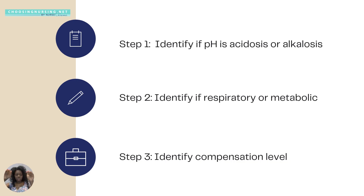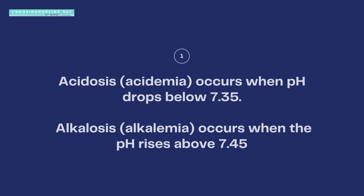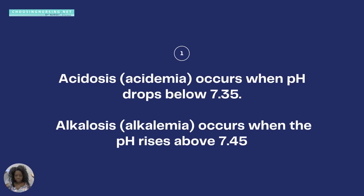Let's start with step one. Before we talk about metabolic or respiratory, we first have to identify: is it acidosis or alkalosis? Acidosis means the pH is less than 7.35. If it's alkalotic, the pH is greater than 7.45. You use the pH range to judge whether it's an acidotic or alkalotic problem.